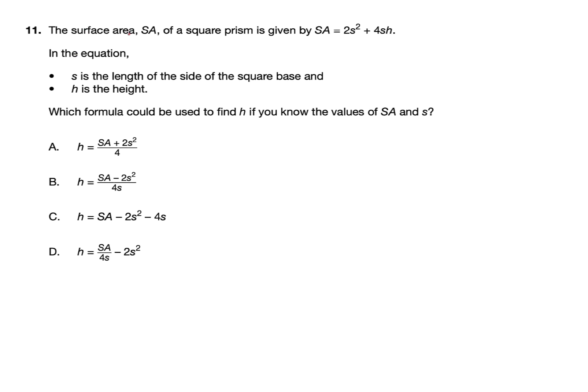Question 11. The surface area SA of a square prism is given by SA = 2s squared plus 4sh. In the equation, s is the length of the square base and h is the height. Which formula could be used to find h if you know the values of SA and s? This is what we call a literal equation because your equation is in letters. On the task test, this is low emphasis.